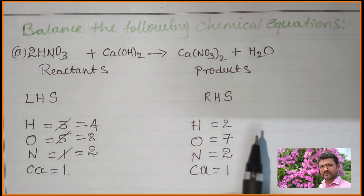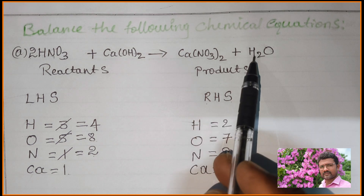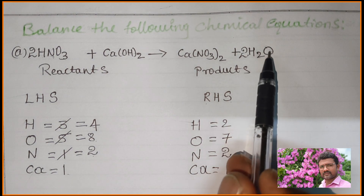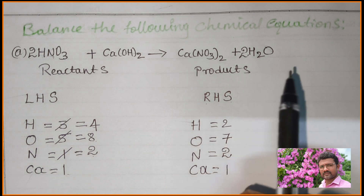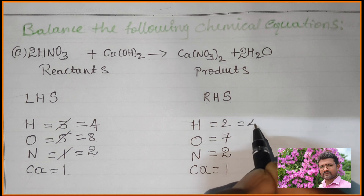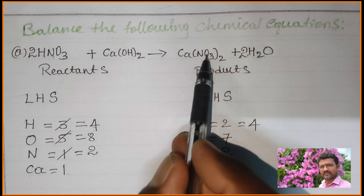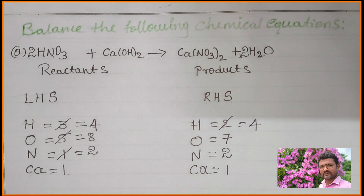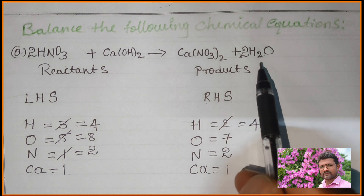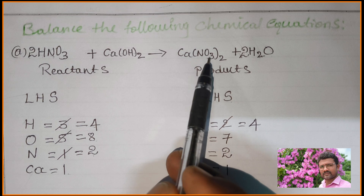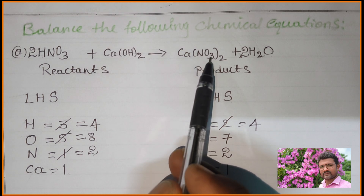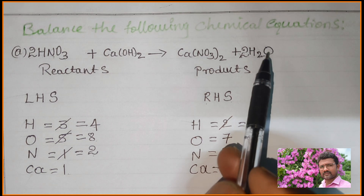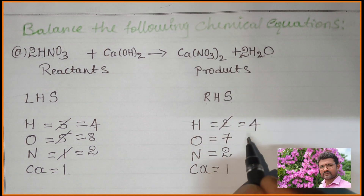Always start with coefficient 2. Hydrogen is present in H2O on the right side, so put coefficient 2 in front of H2O. Multiply 2 to all elements in this molecule: 2 into H2 = 4 hydrogen. For oxygen: 2 into O = 2 oxygen. Total RHS oxygen: 6 from Ca(NO3)2 plus 2 from H2O = 8 oxygen. Total RHS hydrogen: 4.